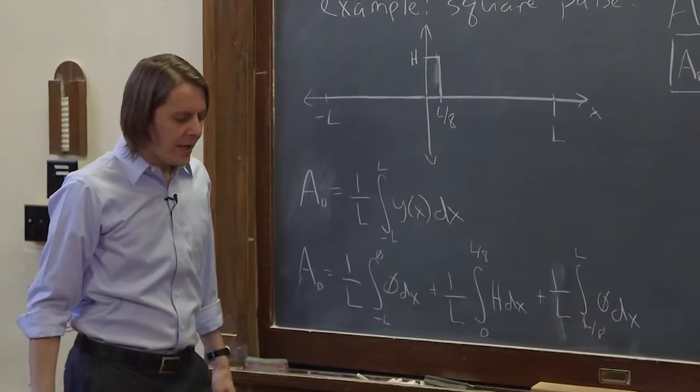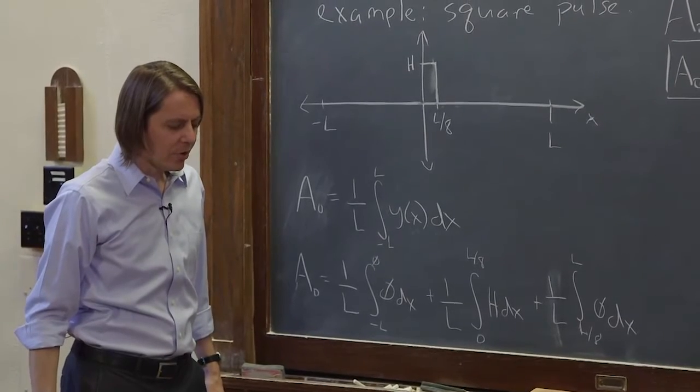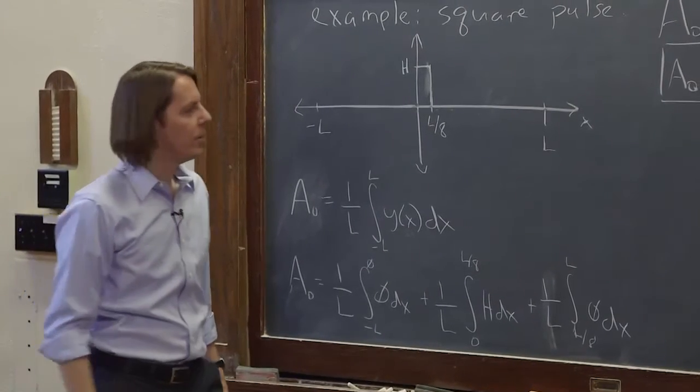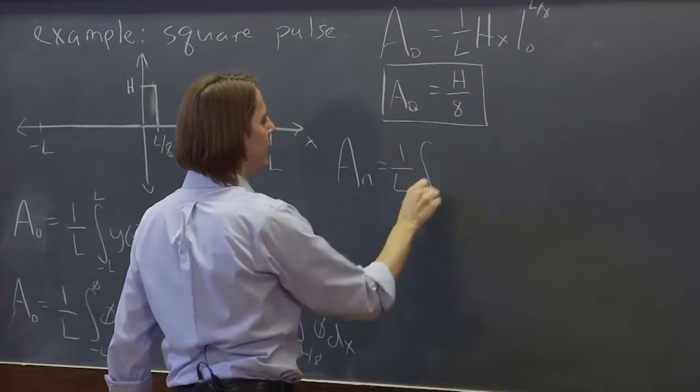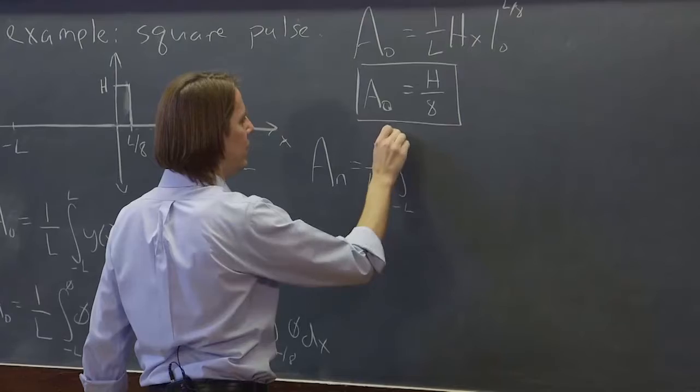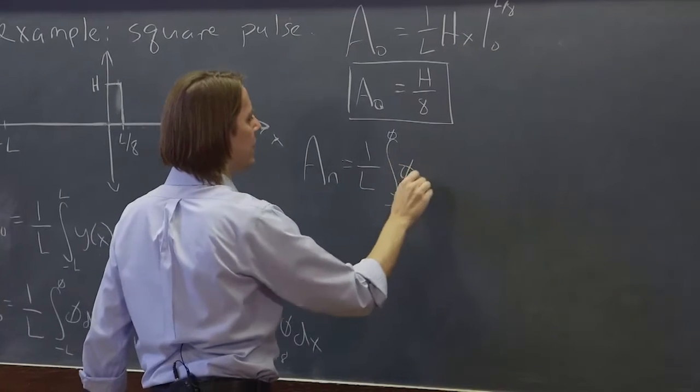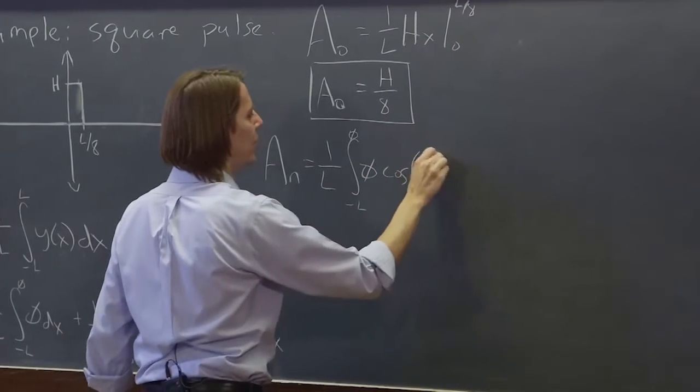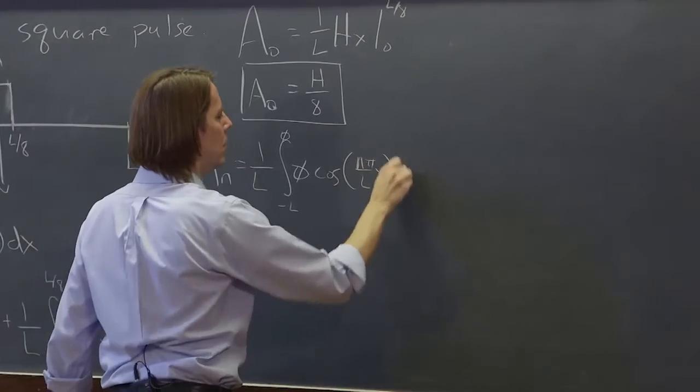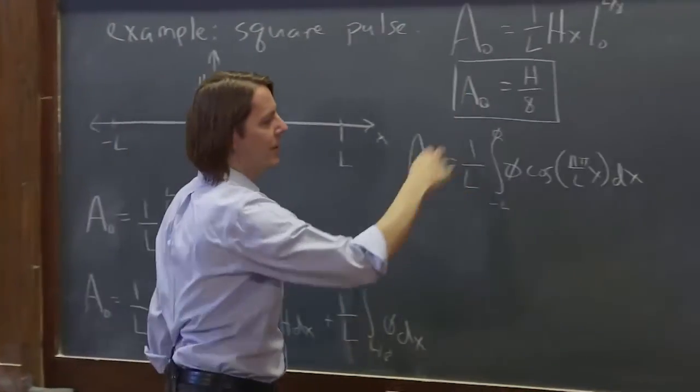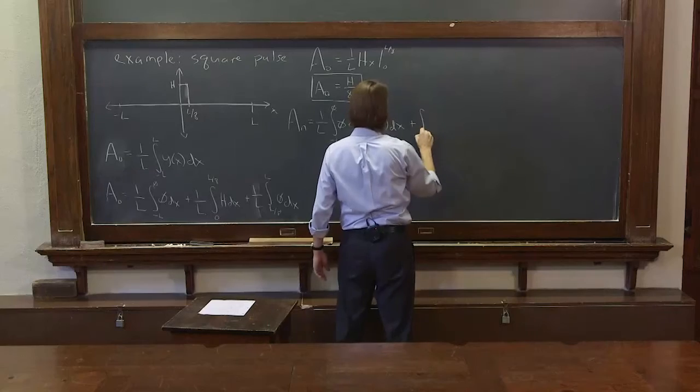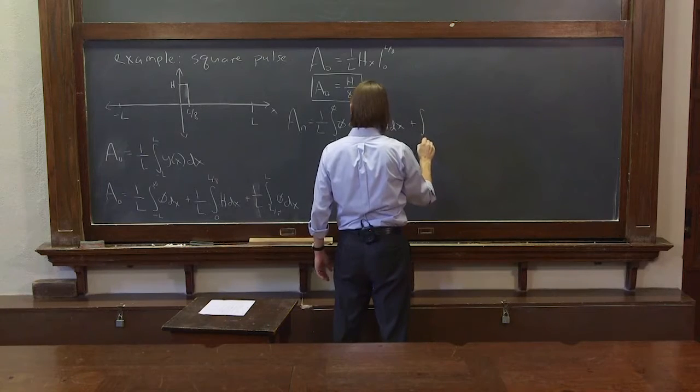Let's go ahead and do the aNs. The aNs are the cosine harmonics. So aN is going to be 1 over l times the integral from minus l to 0 of the function times the cosine harmonics. But that's still just 0, I mean 0 times that, you can still ignore that part.